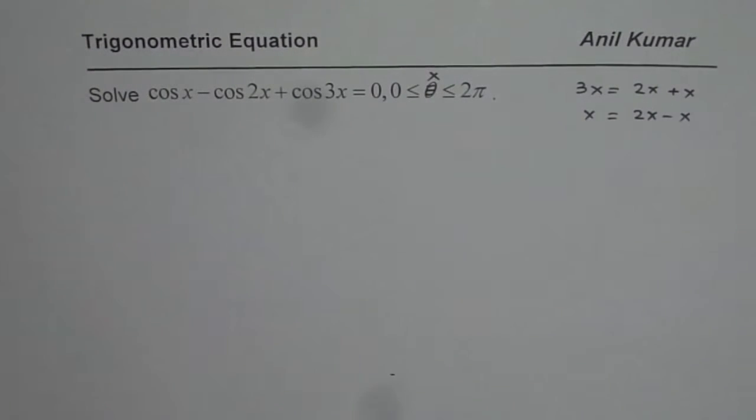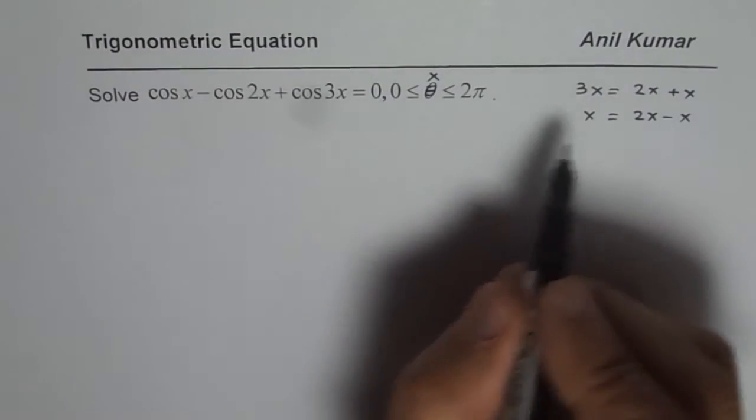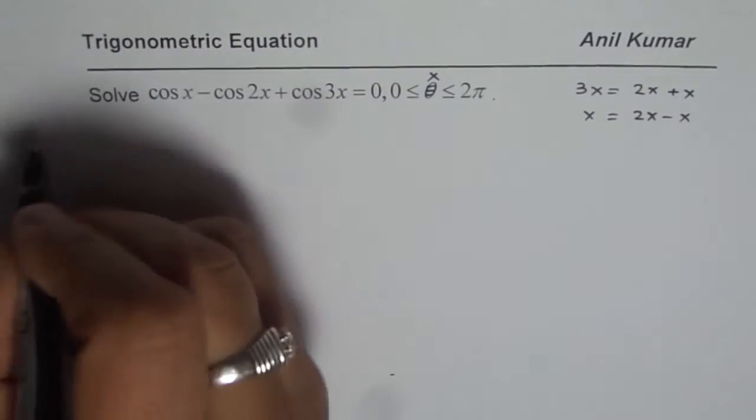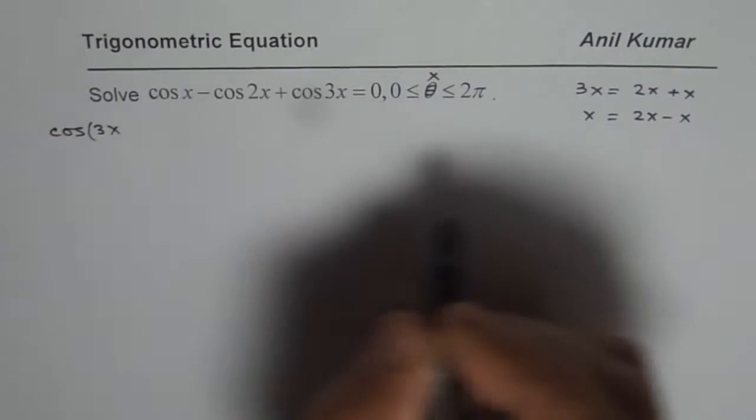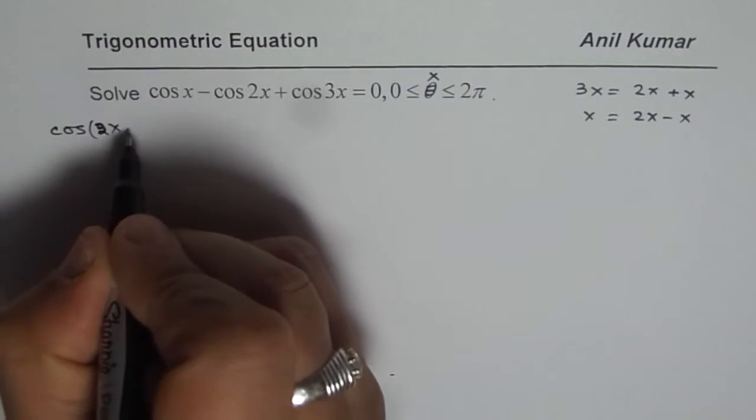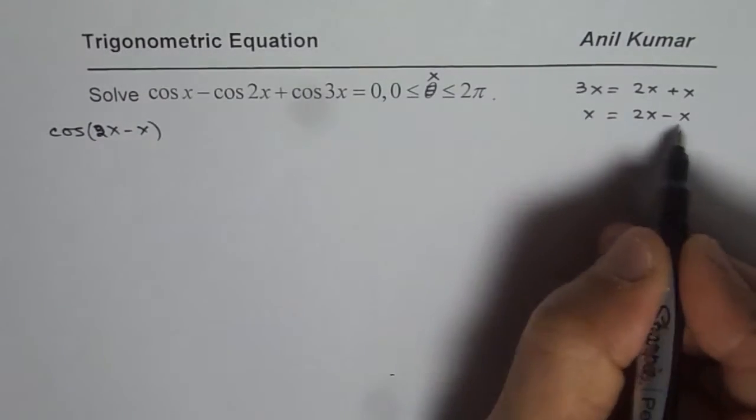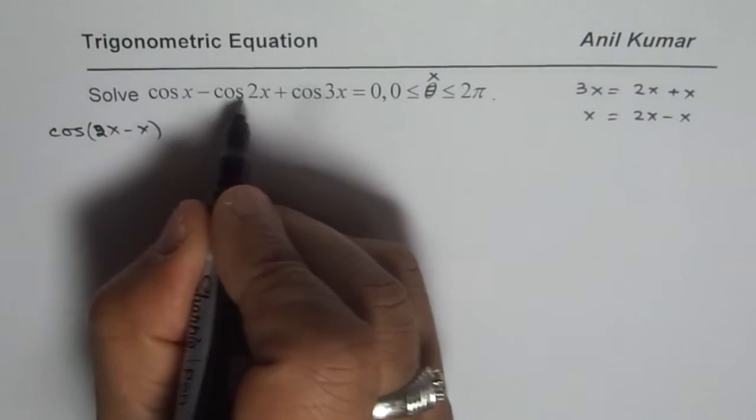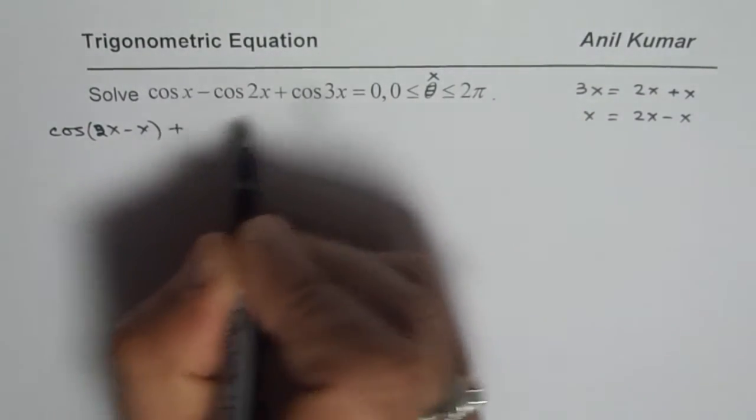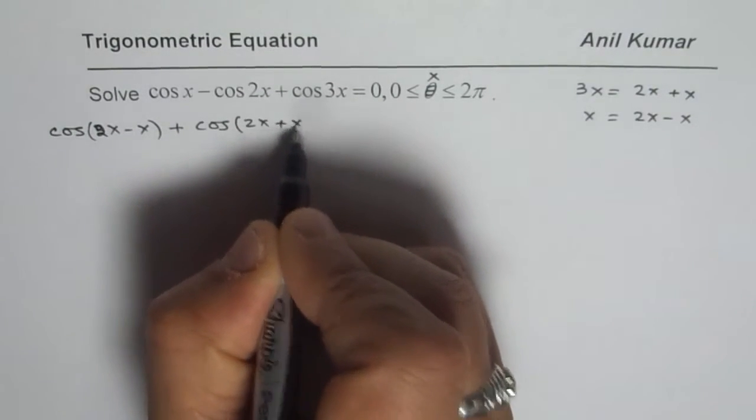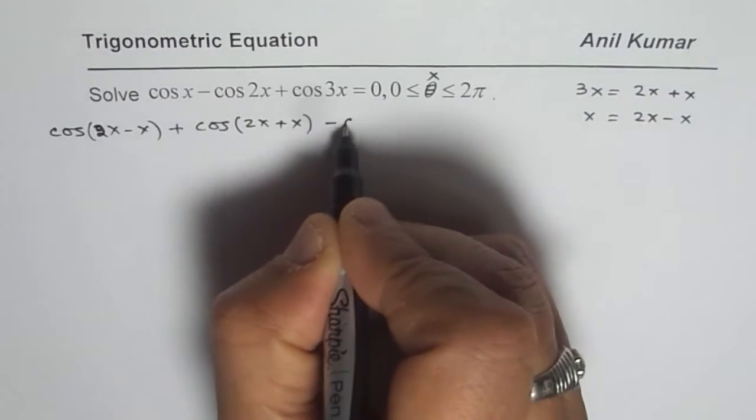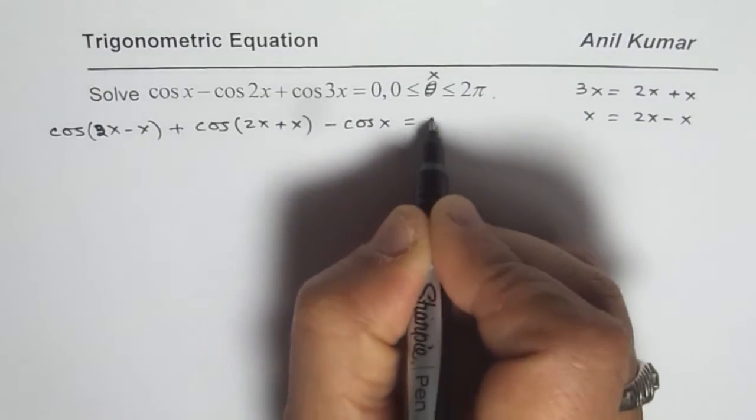That will help us to factor this particular equation. So what we will do is, instead of cos x, I will write cos(2x - x) and I will keep this cos 2x separate and plus cos 3x as 2x plus x and we have minus cos x equals 0.